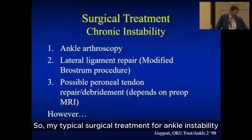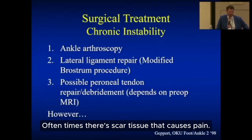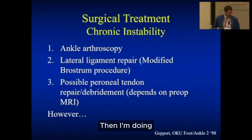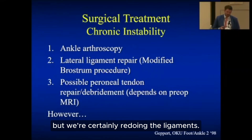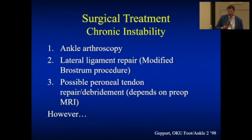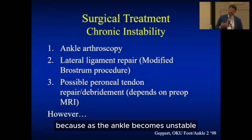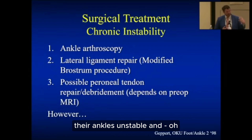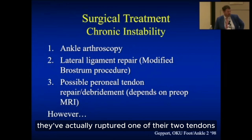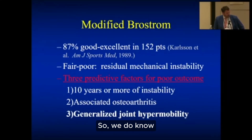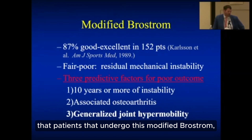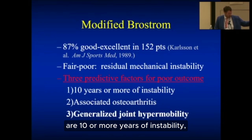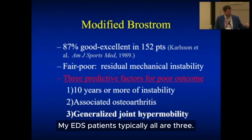My typical surgical treatment starts with ankle arthroscopy — I always want to look in the ankle joint. Often there's scar tissue and extra bone that forms from recurrent instability causing pain, and I want to treat those pain generators. Then I tighten up the lateral ligaments, and in EDS patients I add augmentation. I also look at the peroneal tendons, which have a higher rate of tears because they're trying to act as a secondary stabilizer and getting worn out too. Some EDS patients come in unstable and have actually ruptured one of their peroneal tendons, requiring additional work.